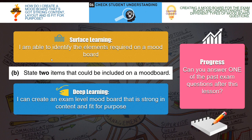I am able to identify the elements required on a mood board. Here's a question: state two items that could be included on a mood board. What could they be? Images, fonts. And if it's a digital mood board, it could be sound, or it could be video clips.